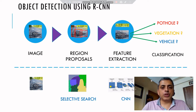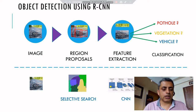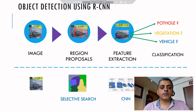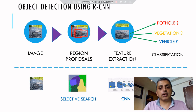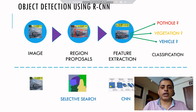The RCNN algorithm was first introduced in 2013. It has different moving parts. The first part starts with an image, then you extract region proposals — regions where there is a likelihood of finding an object. We don't know what object it is, but we know there is some object in that region. From the region proposals, you extract features using a CNN, and then those regions are classified into classes — for example, whether it's a pothole, vegetation, a vehicle, or whatever.